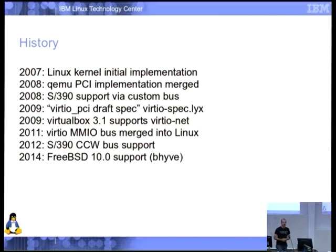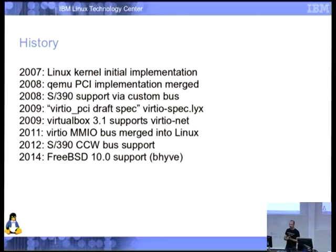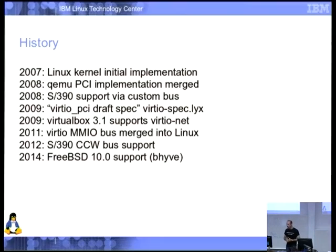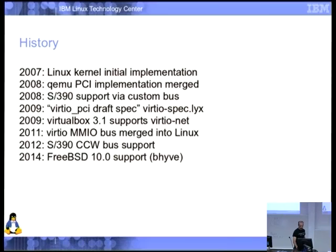In 2014 FreeBSD 10.0 was due to be released — it's been pushed back, with January 14th as the current due date. But something exciting happened in FreeBSD 10: they implemented Bhyve, a legacy-free FreeBSD guest running on a FreeBSD host. Bhyve uses all VirtIO for all its IO. Somebody told me about it and I went 'wow, they've independently implemented all this,' so we've dragged them into the standards process, which is great.